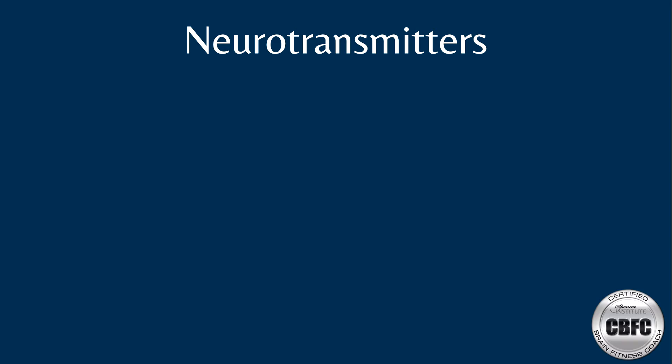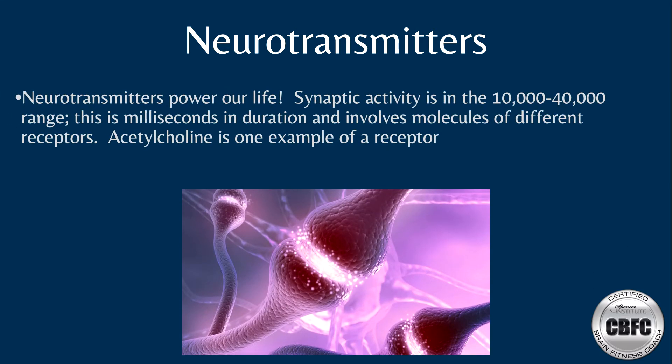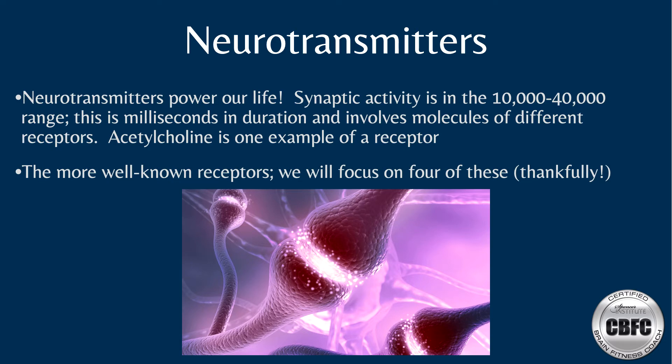Neurons have the potential to create anywhere from 10,000 to 40,000 synaptic connections, illustrating the tremendous capacity and complexity of the central nervous system. Neurotransmitters are naturally occurring chemicals inside the body that transmit messages between cells, controlling nearly every function of the body. They are important in regulating mood, memory, our ability to learn, and overall brain function. There are hundreds of different neurotransmitters, but some are more well known than others.